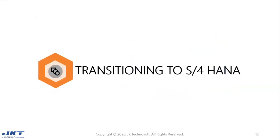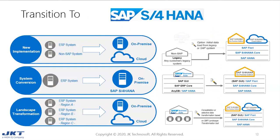Let's move on to transitioning to S4HANA. There are mainly three ways to transition: new implementation, also called greenfield; system conversion, commonly known as brownfield; and landscape transformation, which is mostly bluefield. In the new implementation approach, new and existing customers can implement a new S4HANA system. This includes installation of Netweaver application server 7.5 based on SAP HANA, installation of the HANA and Fiori software, and activation of required business processes, which can be done on-premise as well as on cloud.